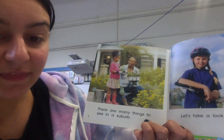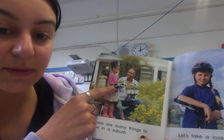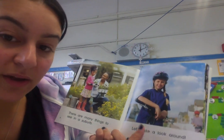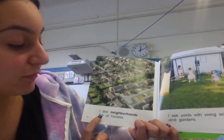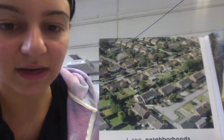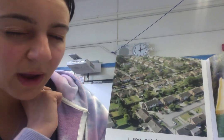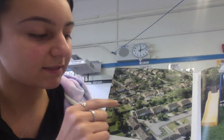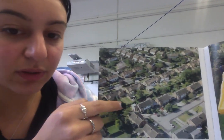There are many things to do and see in a suburb. See, these people are gardening. Let's take a look around. I see neighborhoods full of houses. I want us to really look at this — there are a lot of homes here. Is it crowded? Is it just like the city or is it a little bit different? Look at the spaces between the homes. Look at what you see with the green.